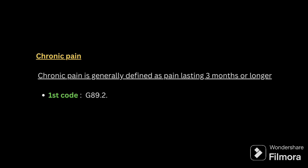Understand the guidelines carefully — the primary diagnosis is very important. Next is neoplasm-related pain: if the patient is admitted for treatment of neoplasm-related pain, the first code should be for neoplasm-related pain and the second code for the neoplasm. If the patient is admitted for treatment of the neoplasm and also has pain, first code for the neoplasm and second code for the neoplasm-related pain.